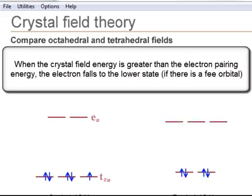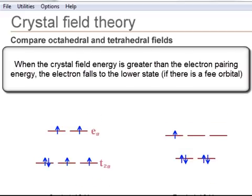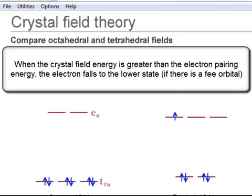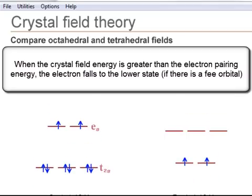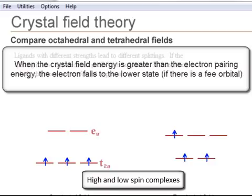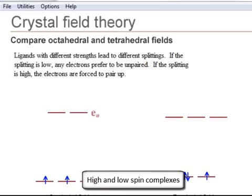Note that as these splittings increase, if possible, the upper electrons fall down to the lower states. These two different electronic configurations are called high-spin and low-spin complexes.